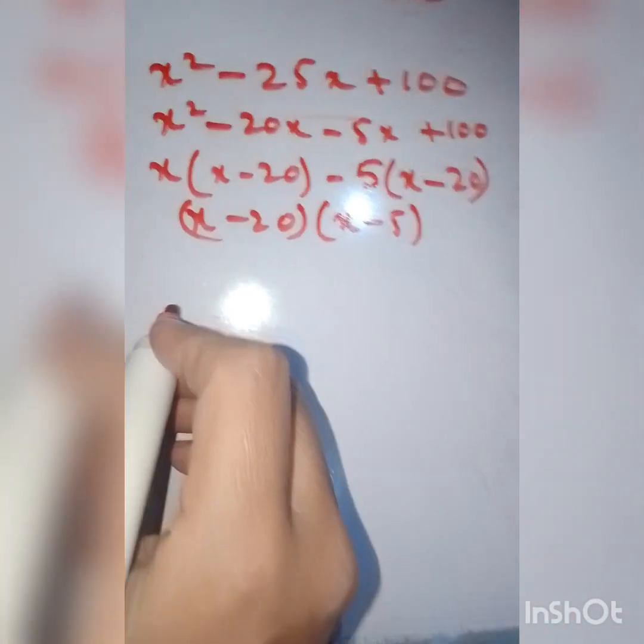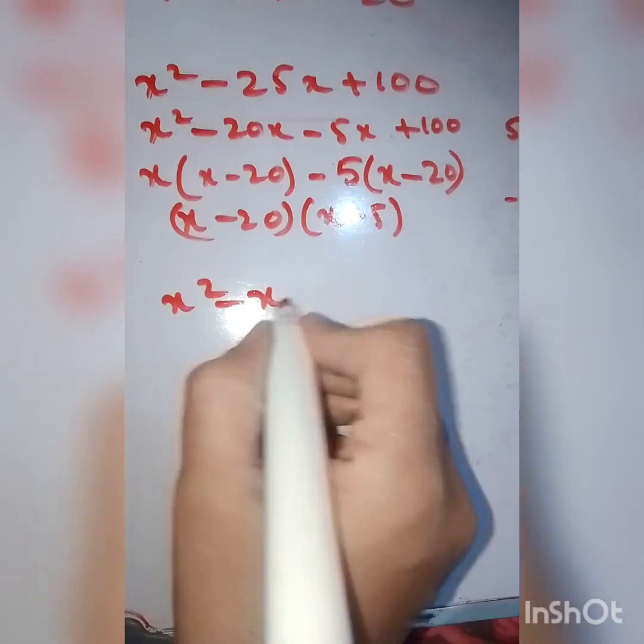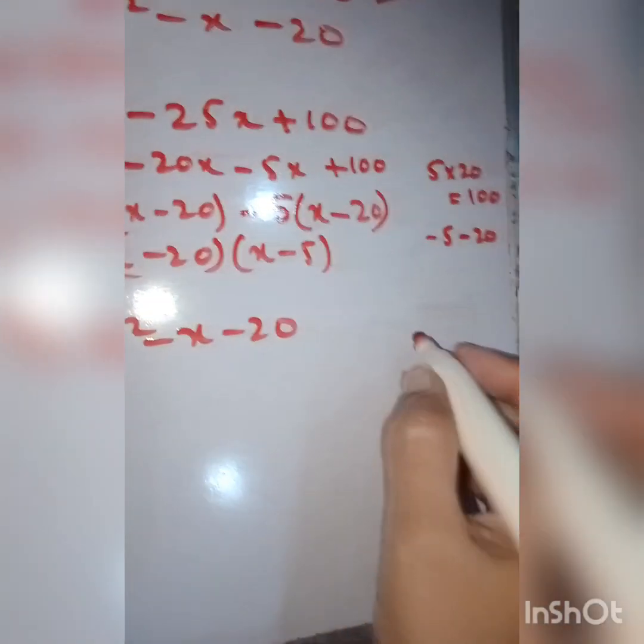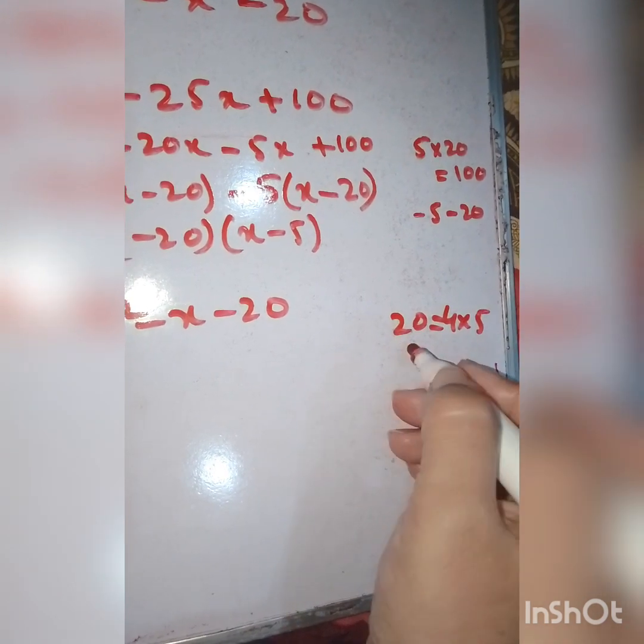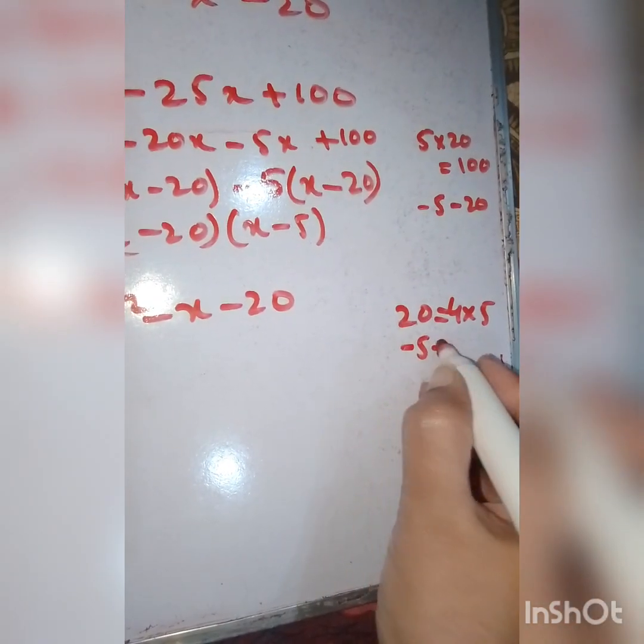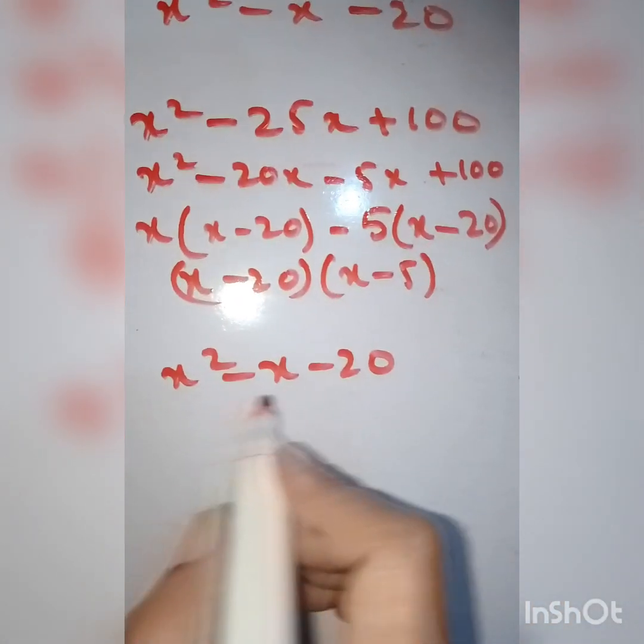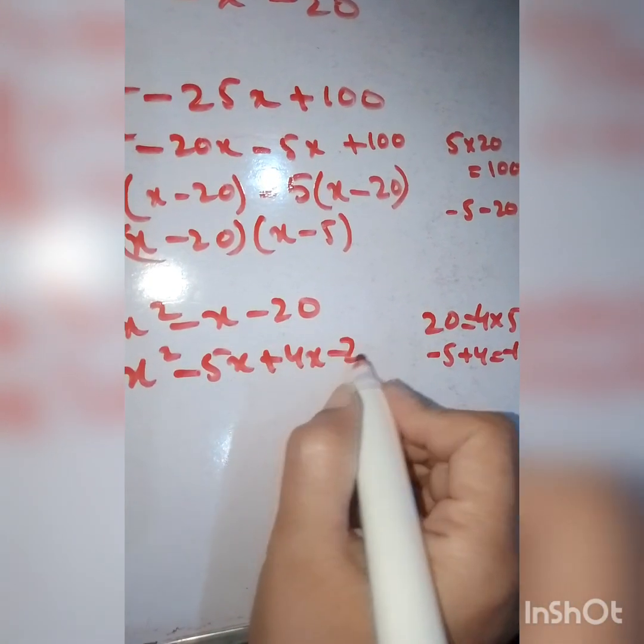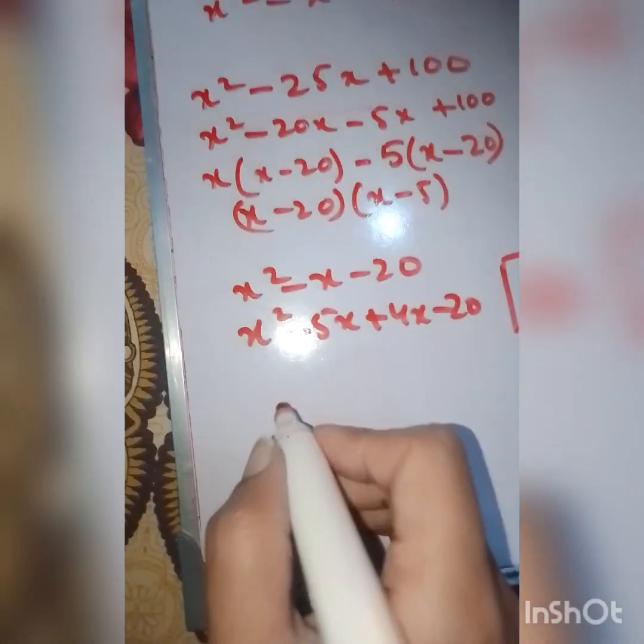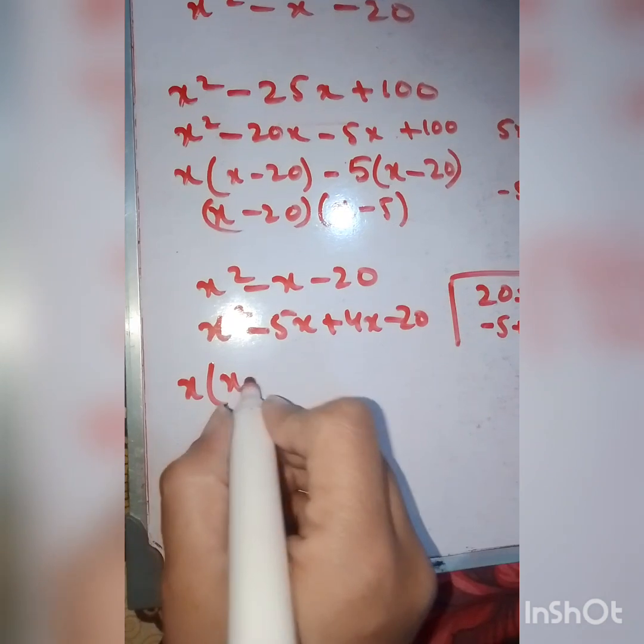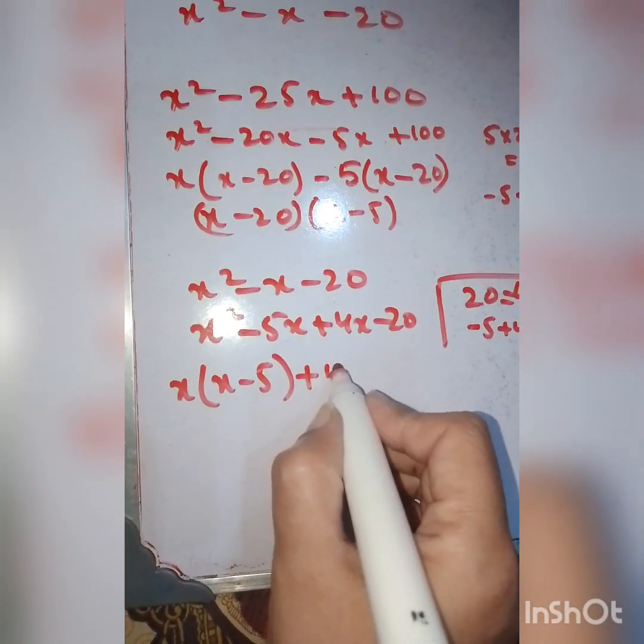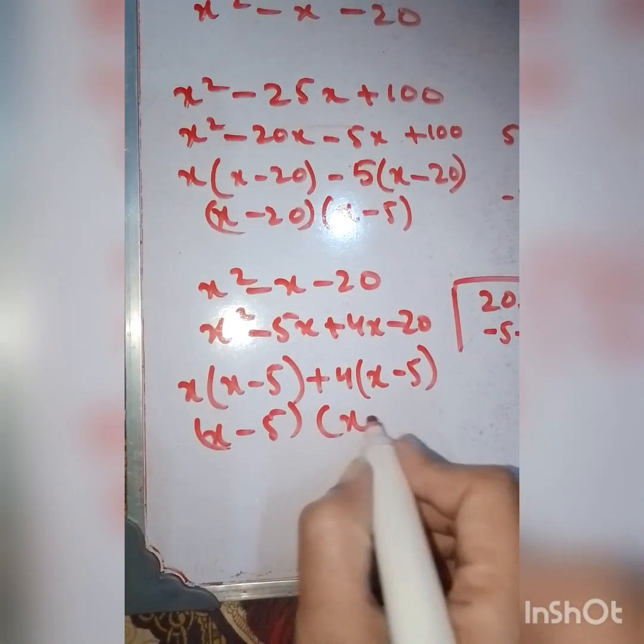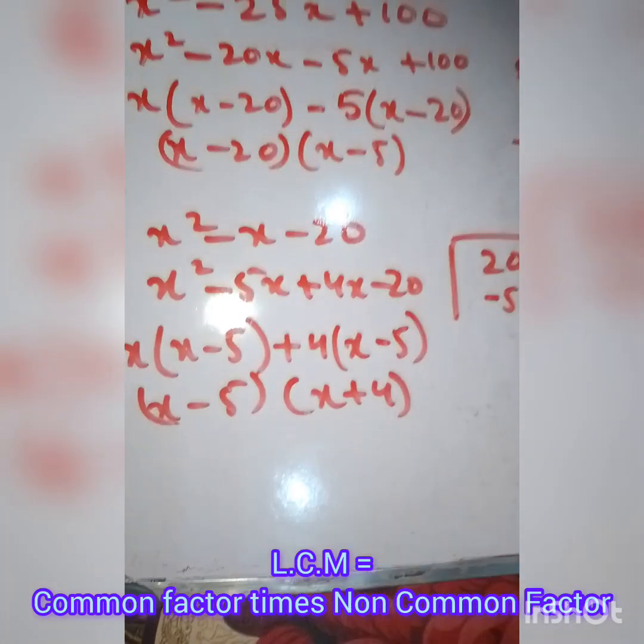The second one is x² - x - 20. Here, 20 equals 4 times 5. If we do -5 plus 4, we get -1. Here is the middle term formula solved: x² - 5x + 4x - 20. Taking x common: x(x - 5) + 4(x - 5). So (x - 5)(x + 4). These are the roots.